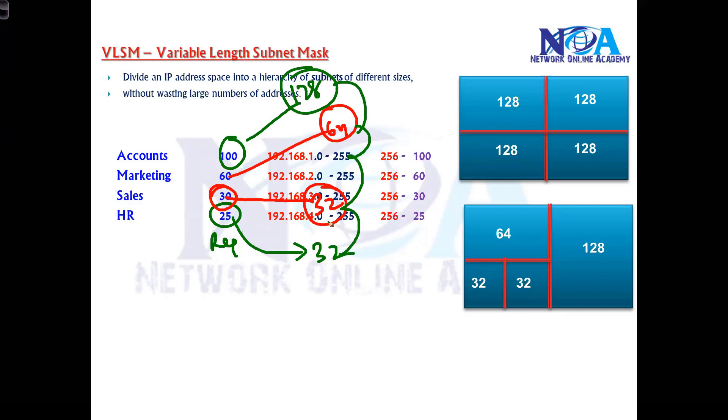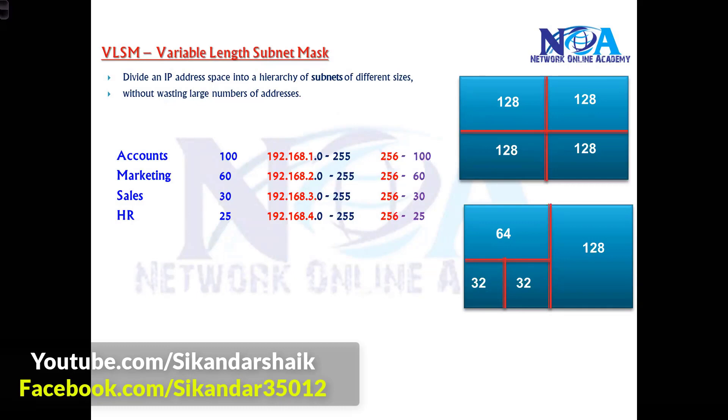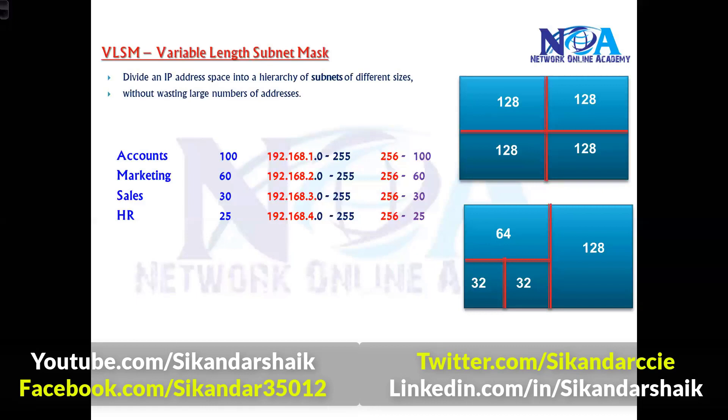Just like kitchen, bathroom, hall, and bedroom in a flat - they're generally in variable sizes depending upon the requirement. The same thing we're doing in VLSM. This further minimizes IP wastage because the subnets we divide will be nearest to that particular requirement.